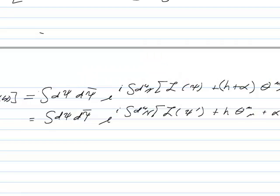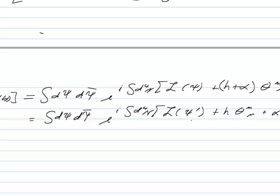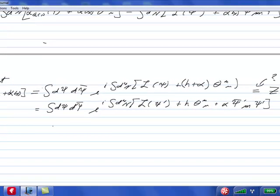Otherwise, our alpha has disappeared if I could shift the variables. But this then, by our previous calculation of the Jacobian, d psi prime, d psi bar prime times the Jacobian, and times the same stuff there. We're going to write that as e to the log j.